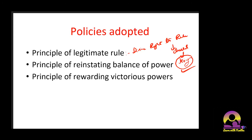Second, the Principle of Reinstating Balance of Power — according to which France was to be surrounded by strong states, reducing the chances of future French aggression. The balance of power meant whoever had more power would be reduced so all would be equal. Third, the Principle of Rewarding Victorious Powers — Britain, Austria-Hungary, Prussia, and Russia, as victorious powers, were rewarded: whatever boundaries Napoleon had conquered were given back to these countries.